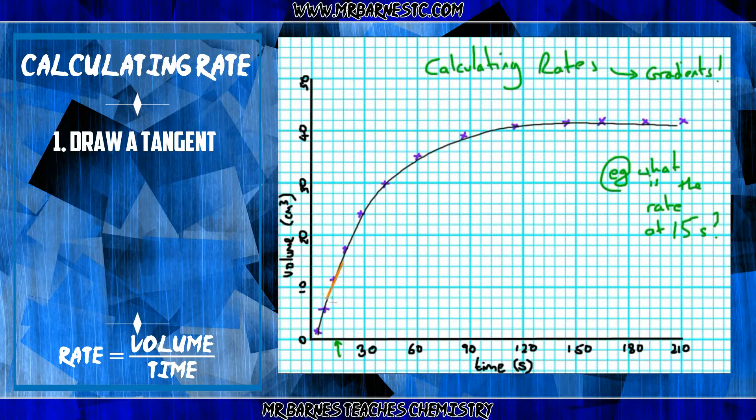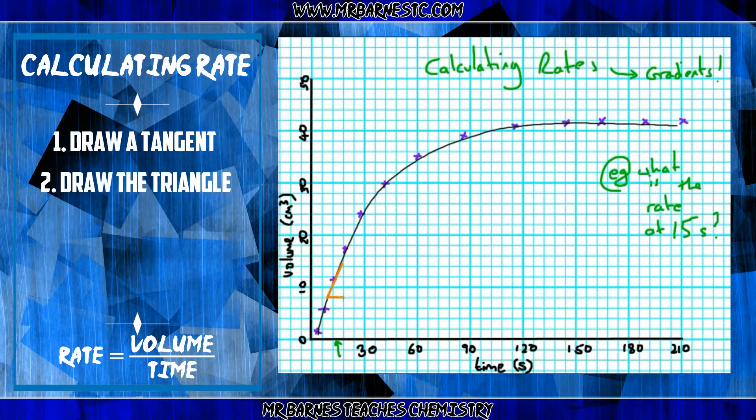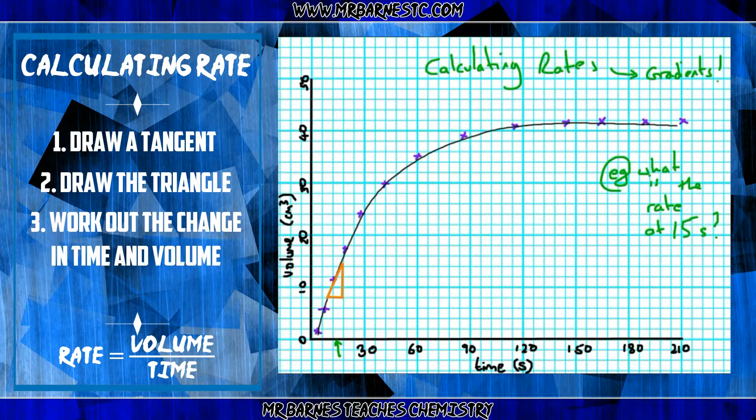Once you've done that, draw a line across and up to make a triangle, as you can see here. Now, your next step is to figure out what the values are on your bottom and your side of your triangle.